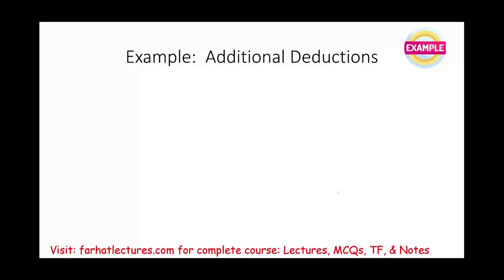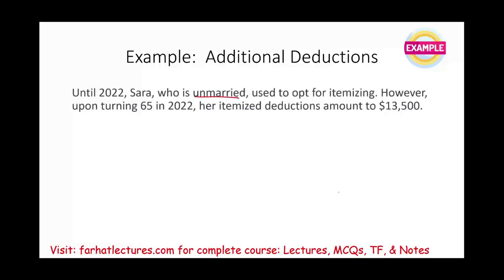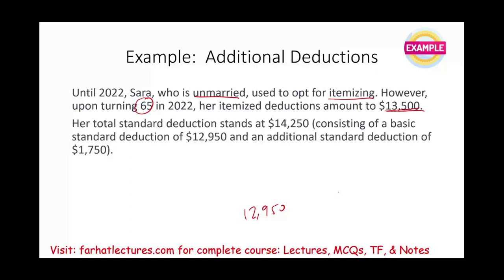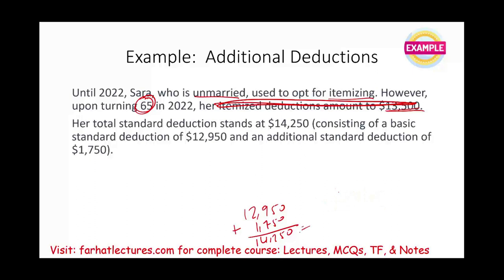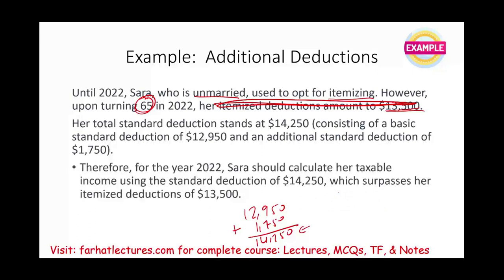Now let's look at an example illustrating the additional deduction. Sarah, who is single, used to itemize her deductions. Upon turning 65, her itemized deductions were $13,500 and her standard deduction as a single filer is $12,950. However, because she turned 65, she also qualifies for the additional $1,750, making her total standard deduction $14,700. Since $14,700 exceeds her itemized amount, she will take the standard deduction and does not need to prepare Schedule A.